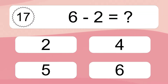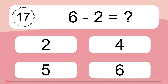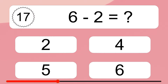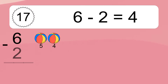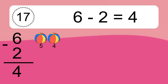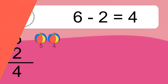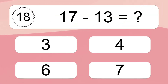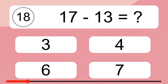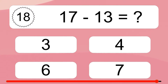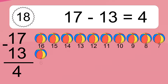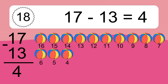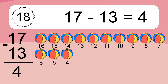6 minus 2 equals what? 6 minus 2 equals 4. Let's count it! 5, 4. 17 minus 13 equals what? 17 minus 13 equals 4. Let's count it! 16, 15, 14, 13, 12, 11, 10, 9, 8, 7, 6, 5, 4.